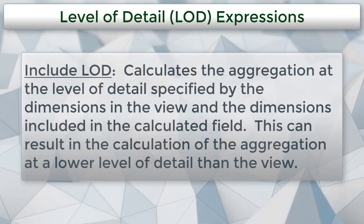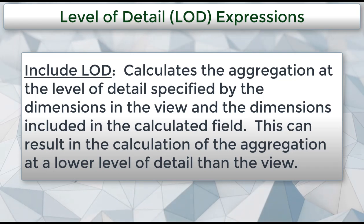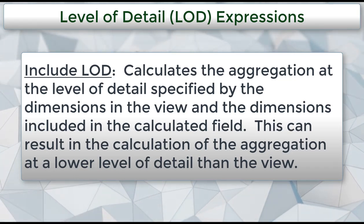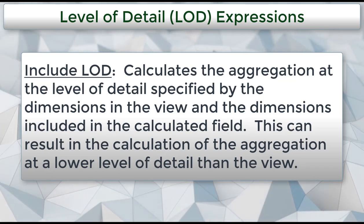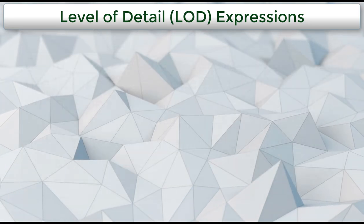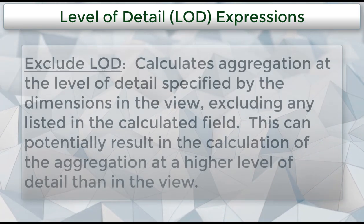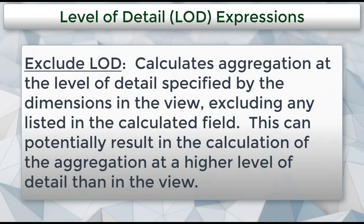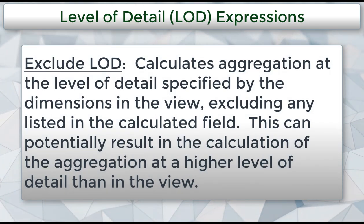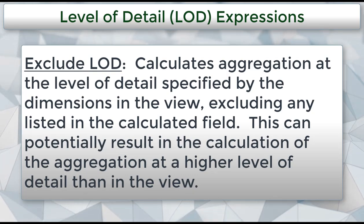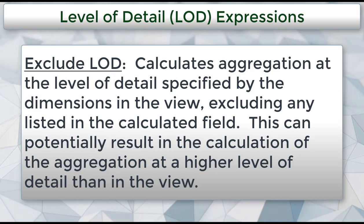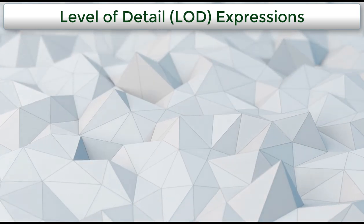An include level of detail expression calculates the aggregation at the level of detail specified by the dimensions in the view and the dimensions included in the calculated field. The result can be a calculation at a lower level than the detail in the view. An exclude level of detail expression calculates the aggregation at the level of detail specified by the dimensions in the view, excluding any listed in the calculated field. This can potentially result in the calculation of the aggregation at a higher level of detail than in the view.